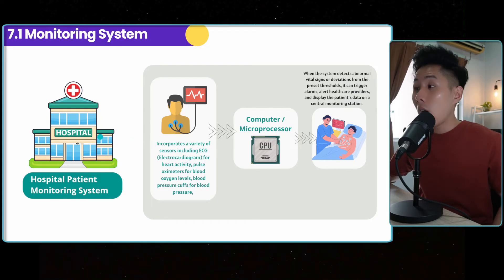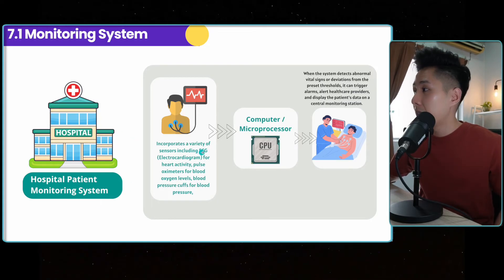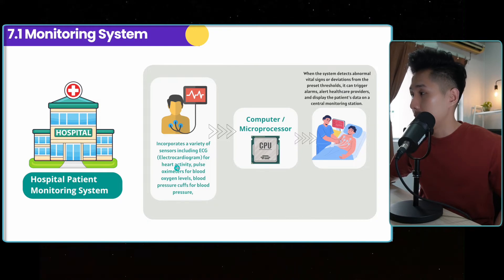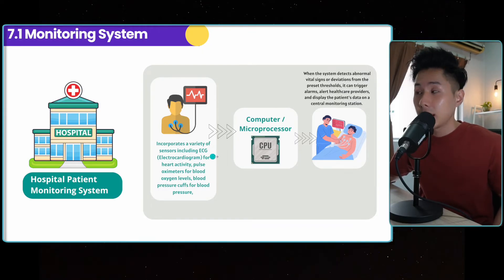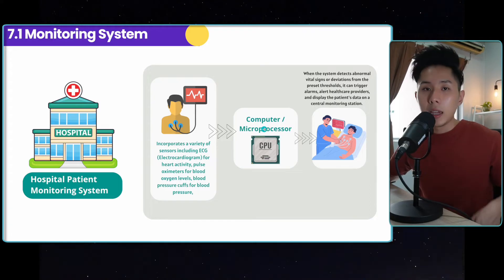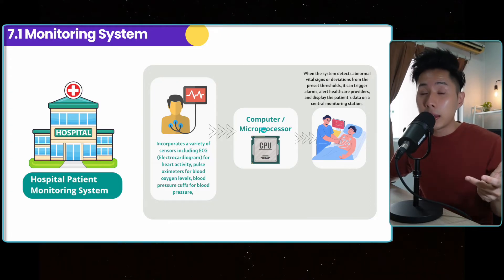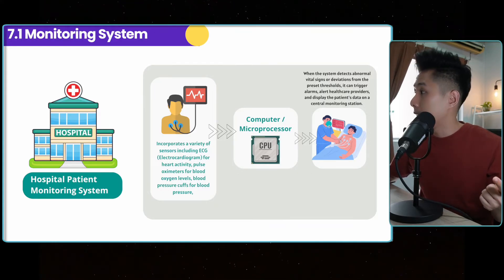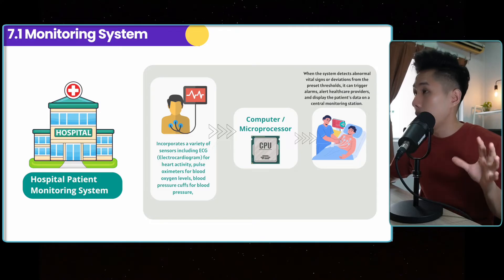So the third example, hospital patient monitoring system incorporates a variety of sensors like ECG for heart activity, pulse oximeter for blood oxygen level, blood pressure cuff for blood pressure. So all this data will be sent to the microprocessor. If an unacceptable value is received, the system will send a warning to the doctors and nurses so that they can do something about it to help the patient.